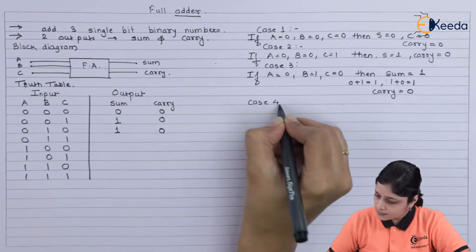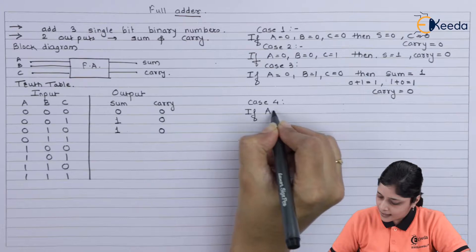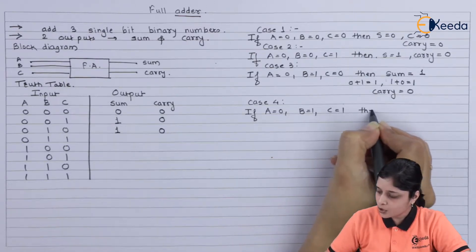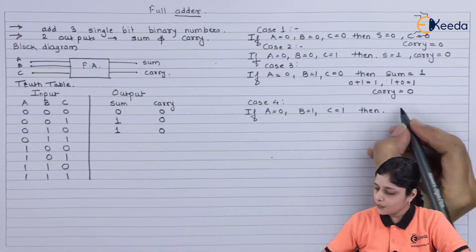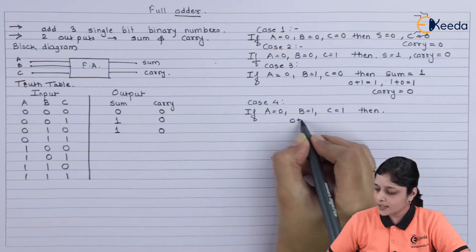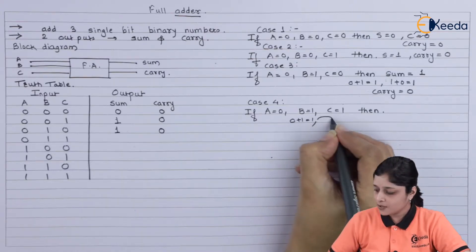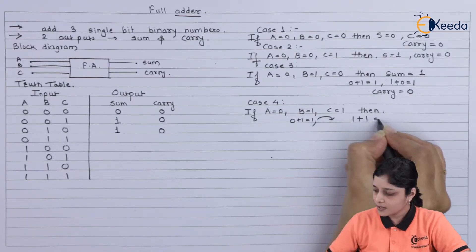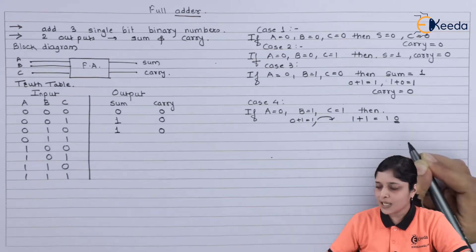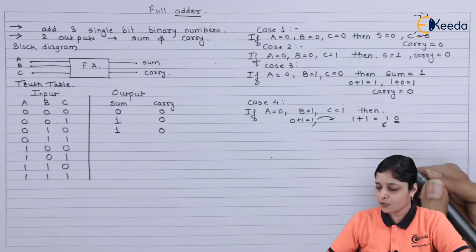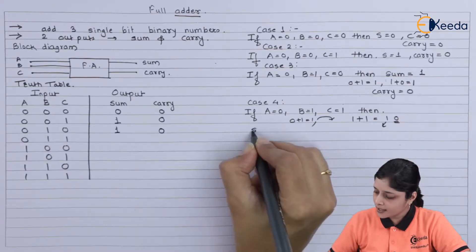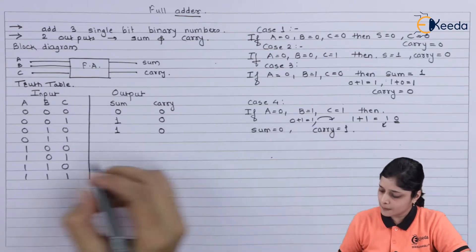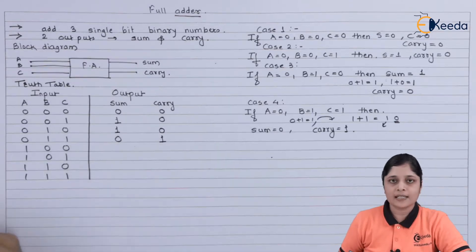Case 4: if A equals 0, B equals 1, and C equals 1, then we add 0 plus 1 to get 1, take that 1 for further addition: 1 plus 1 is 10 in binary, so the answer is 0 and carry is 1. At the output we get sum as 0 and carry as 1.